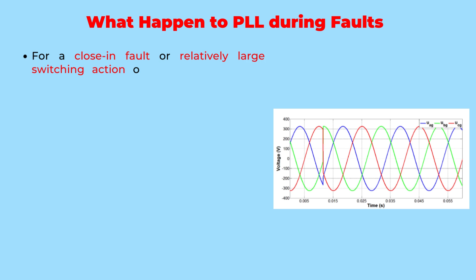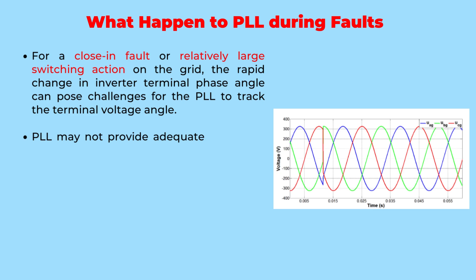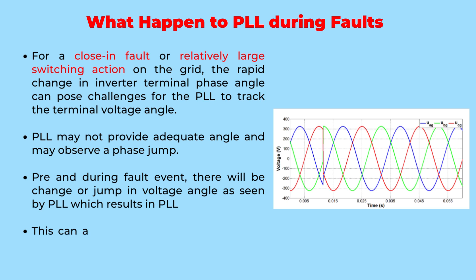Now let us discuss the actual issue of PLL performance during faults. In the dynamic world of power systems, unexpected events can occur that put the performance of the phase-locked loop to the test. During a close-in fault or a significant switching action on the grid, the sudden and drastic change in the inverter's terminal phase angle can present challenges for the PLL's ability to accurately track the voltage angle. The rapid alteration in the inverter's terminal voltage will cause distorted voltage and frequency deviation, and can leave the PLL scrambling to keep up. The PLL, which relies on precise phase measurements to maintain synchronization, may struggle to provide an adequate estimation of the angle as it tries to catch up with the rapidly changing conditions.